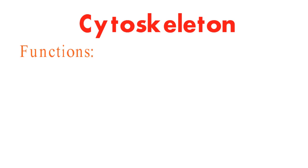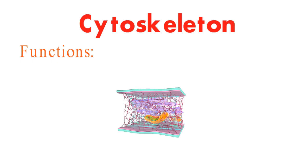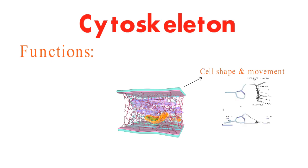The cytoskeleton is essential for many cellular functions. Here are some examples. The cytoskeleton provides the cell with its shape and helps it to move. For example, when a cell needs to move, the cytoskeleton can rearrange its actin filaments to form a structure called the pseudopod. The pseudopod then pushes against the extracellular matrix, allowing the cell to move forward.